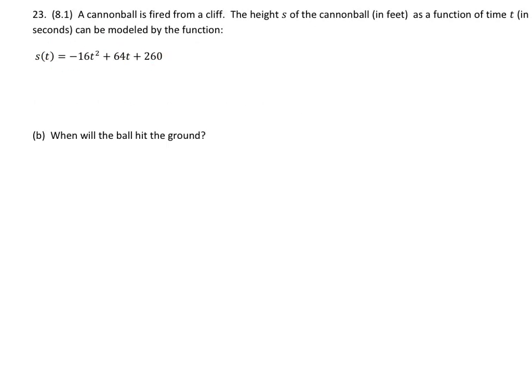Now part b of this question is to figure out when the ball will hit the ground. Since the height at the ground is zero, we'll just replace s(t) with zero and then solve for t. So this is our new expression, where you can see we've replaced s(t) with this zero here, and then we just have to figure out a value of t that will work.